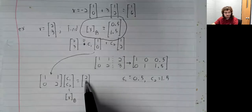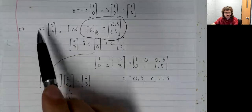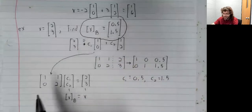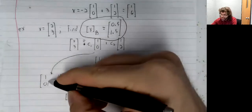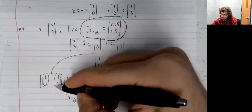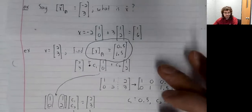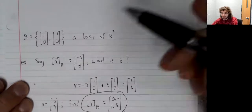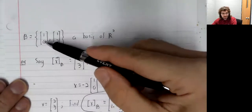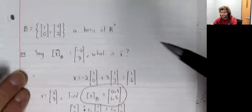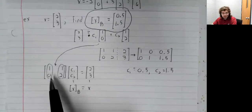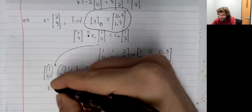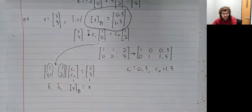The vector 2, 3 is x. And this matrix, if we look at its columns, 1, 0 and 1, 2. And now we go back and we look at this basis, 1, 0 and 1, 2. This matrix has as its columns, the vectors in the basis.